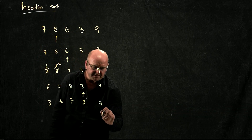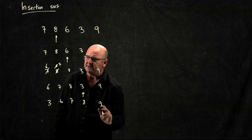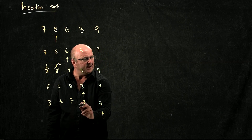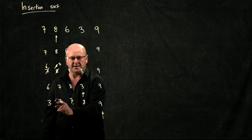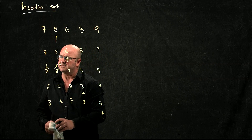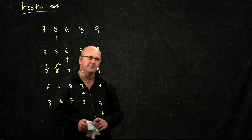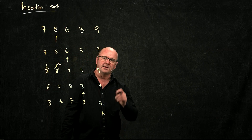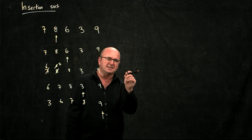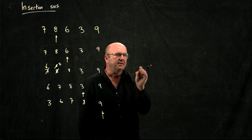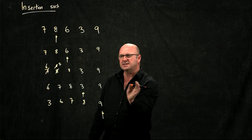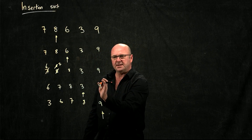And then finally, we take the 9 out and do the same thing. Is the 9 less than the 8? Is the 9 less than the 7? And so on. So in this case, we're taking out an element and we're comparing it to everything before it in the list.